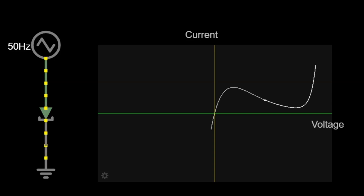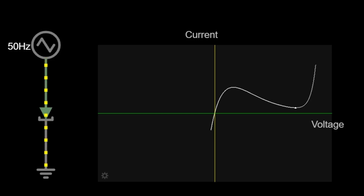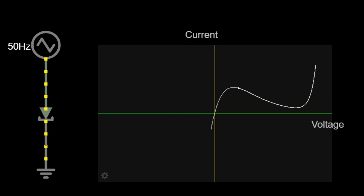Imagine you are standing in front of a big wall. Normally, you would have to climb over it to get to the other side. But what if you could magically pass right through the wall without climbing? That's what electrons do in a tunnel diode. They don't wait for a big push — they just tunnel through the barrier.